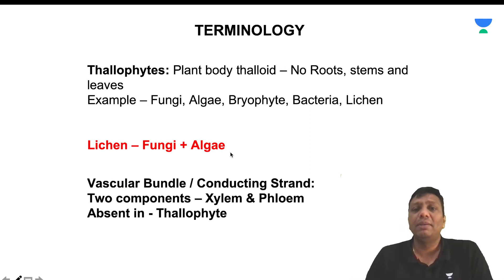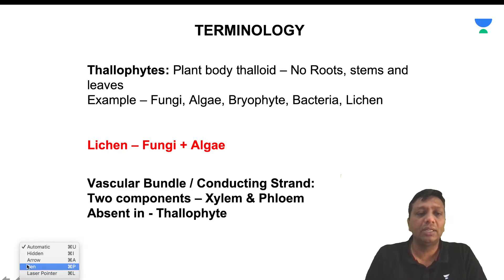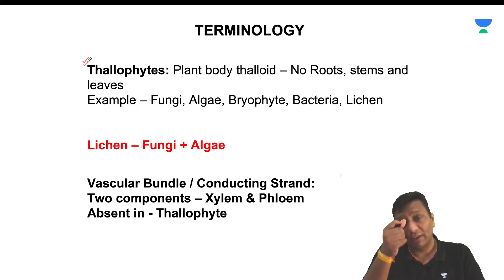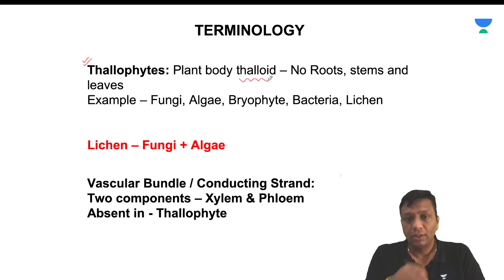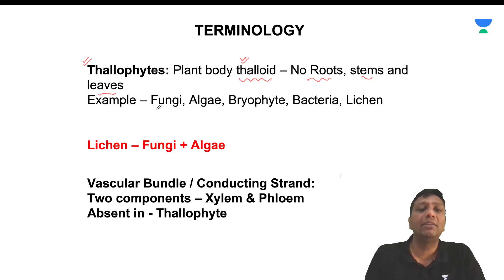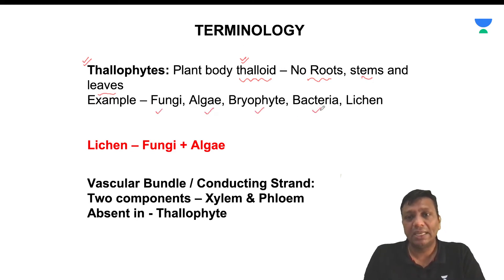Some terminologies are very important for plant diversity. One very important term is Thallophyta. Thallophytes are actually those group of plants whose plant body is thalloid — meaning these plants have no roots, no stems, and no leaves. Examples include fungi, algae, bryophytes, bacteria, and also lichen.